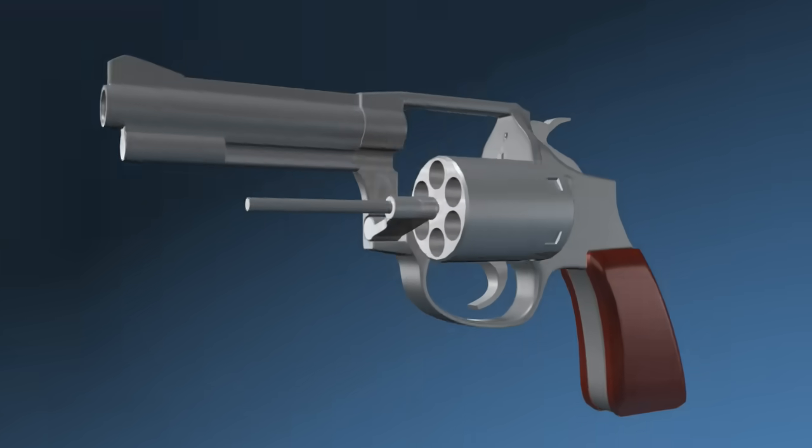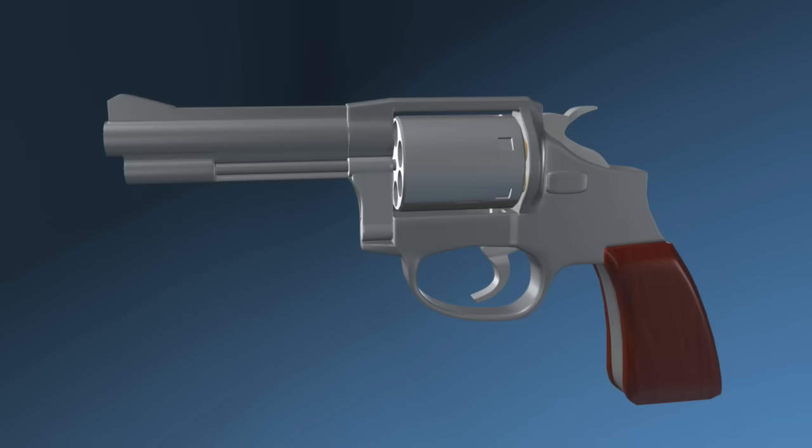The revolver for this example is double action, meaning that the hammer is cocked back when pulling the trigger and once the trigger is pulled all the way back, the hammer is released to hit the firing pin.